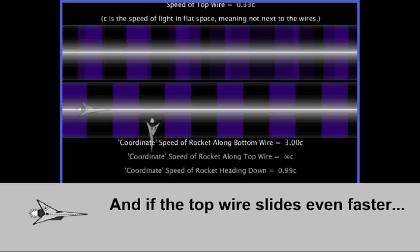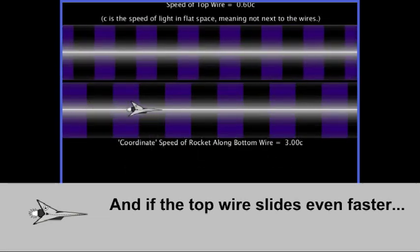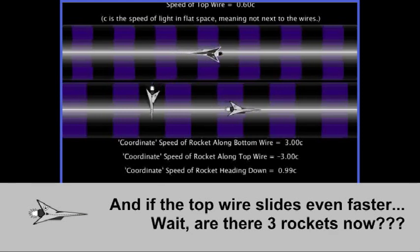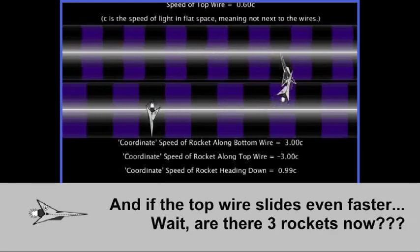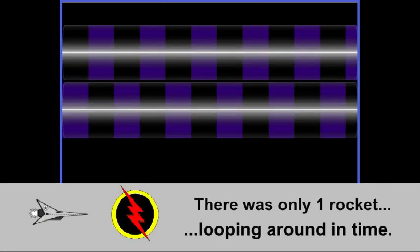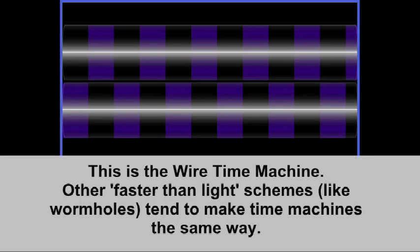So what happens if we speed up the top wire even faster? Watch carefully, this is weird. Yes, there are three rockets on screen. Where did they come from, and where did they just go? In fact, there's only one rocket, but it's looping around in time. You may be familiar with this concept from assorted pop culture things. And this is the wire time machine model.